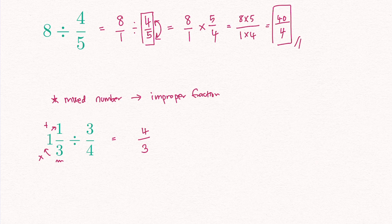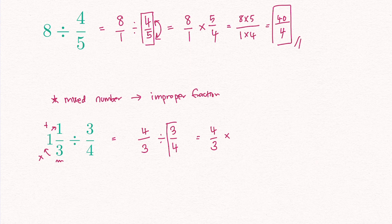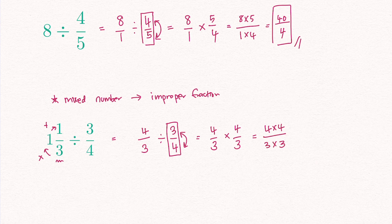Now that I have my improper fraction written down, I write the rest of the question: divide by 3 over 4. To divide two fractions, I multiply by the reciprocal of the second fraction. Keeping the first fraction 4 over 3 as it is, I times it by the reciprocal of 3 over 4 — simply make it go upside down and swap places — it becomes 4 over 3. Then I times the numerators together and the denominators together: 4 times 4 over 3 times 3. 4 times 4 equals 16, and 3 times 3 equals 9.